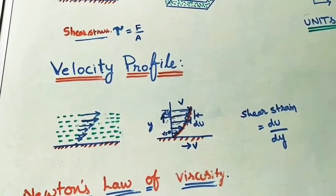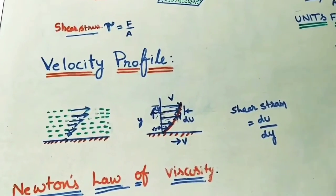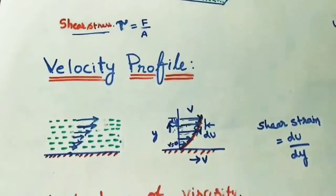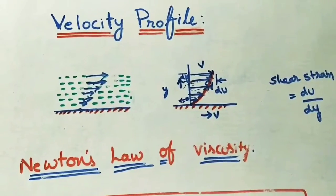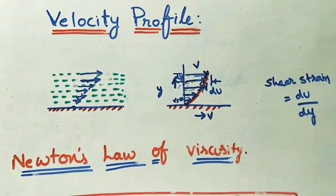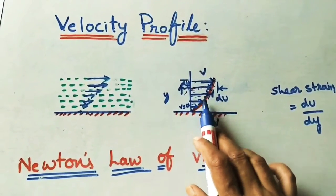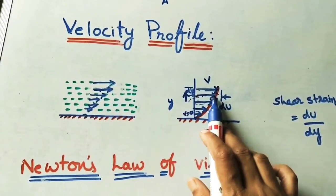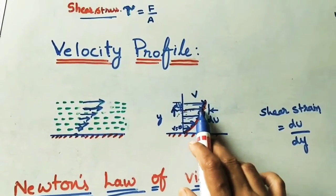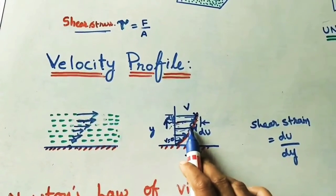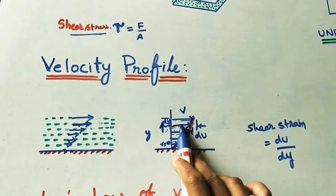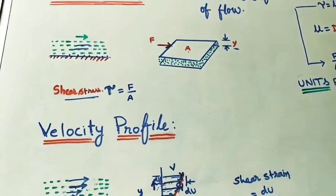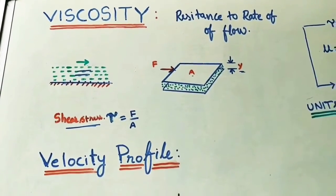Using this understanding, we can define viscosity as: resistance to rate of flow, or it is a property of fluid which offers resistance to movement of one layer of fluid over another adjacent layer of the fluid. These are the two definitions we can write for viscosity.